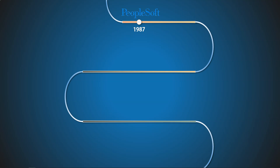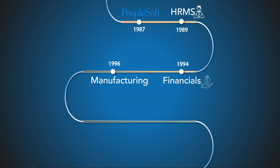PeopleSoft was founded in 1987 and released its first product, HRMS, in 1989 — its most popular product. In 1994 they released Financial Applications, and in 1996, Manufacturing. In 1997, PeopleSoft version 7 was released, which expanded the client-server architecture by adding another tier called App Server to better handle client requests. In the same version, App Designer and the DataMover tool were released — DataMover allows system admins to export and import data into the PeopleSoft application. In 1998, PeopleSoft released the Student Admin module, today called Campus Solutions, and I believe the majority of US universities still use PeopleSoft.